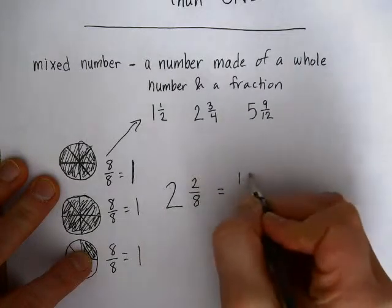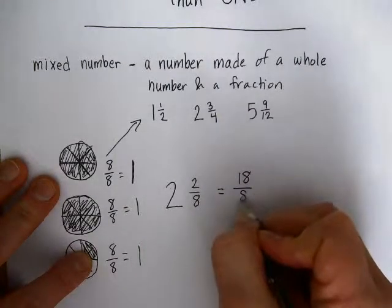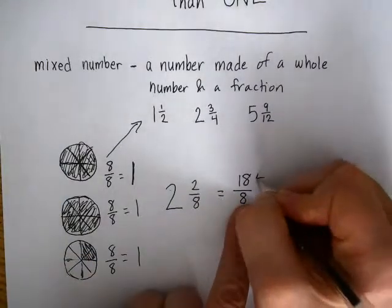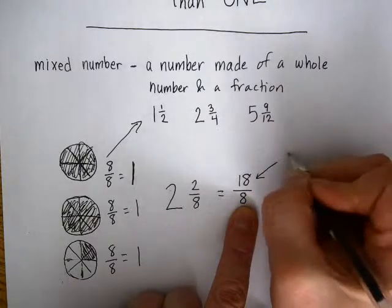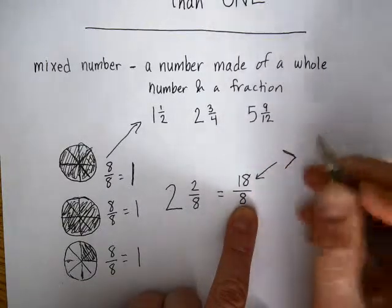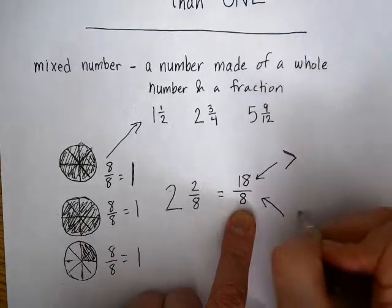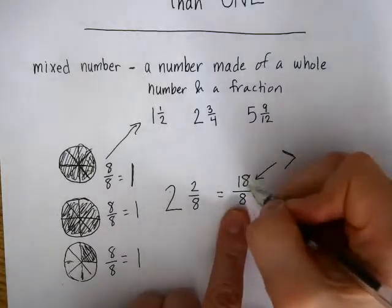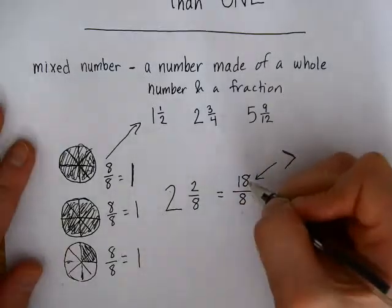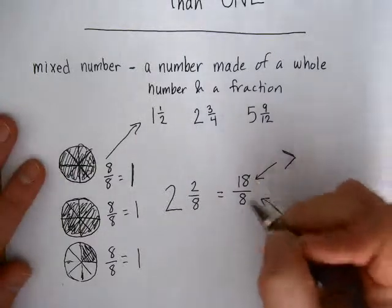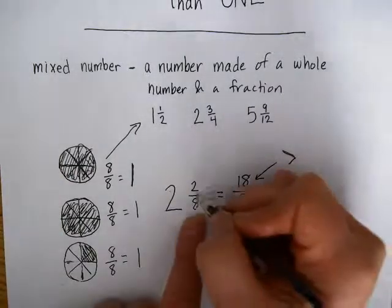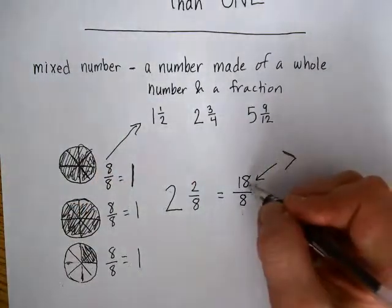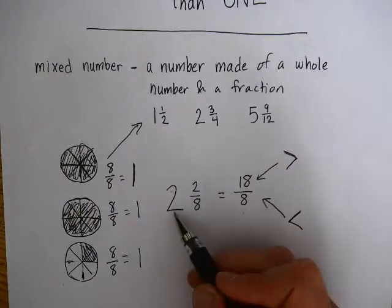I ate 18 pieces that were broken into eighths. I ate 18 eighths. So in the case that the numerator is bigger than the denominator, this is going to mean that there's more than one whole. Usually we see fractions with just a small number on top and a big number on bottom. If we end up with a big number on top and a small number on bottom, that means we have more than one.